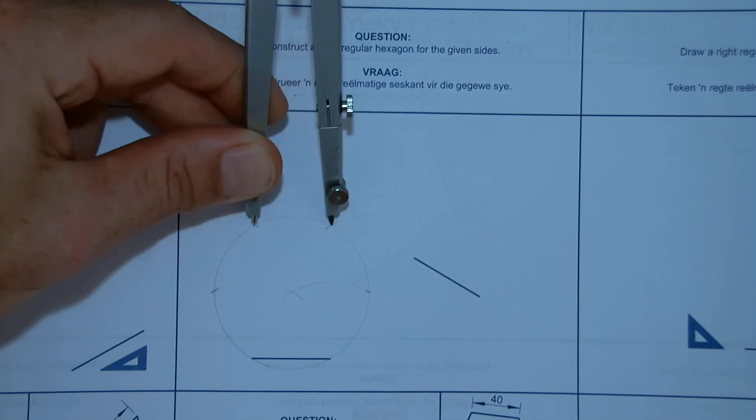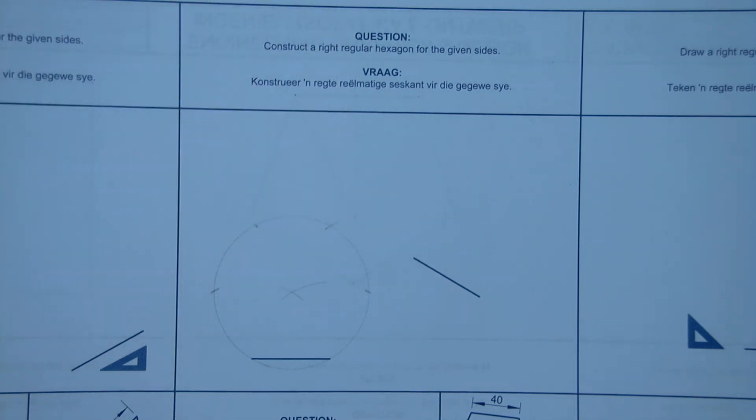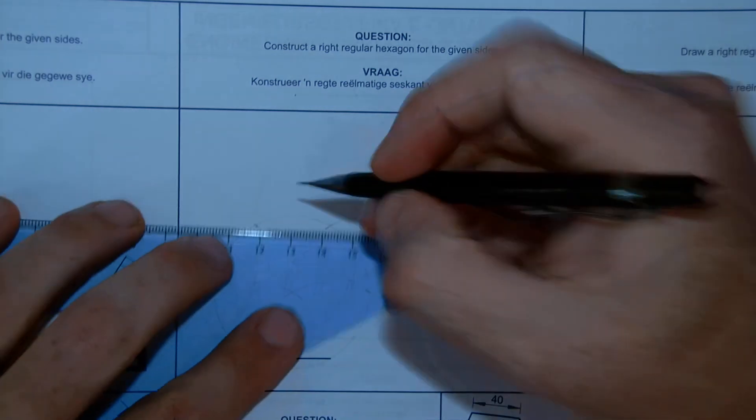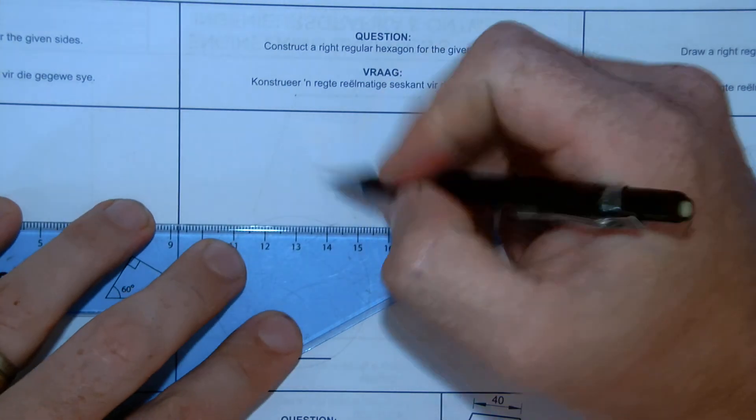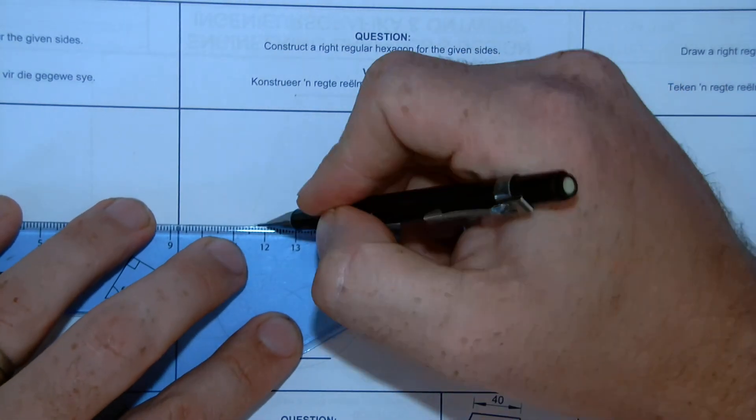Just confirm it comes together. Yes, it does. So, all I have to do now is connect all those sides together, and then I've got my hexagon.